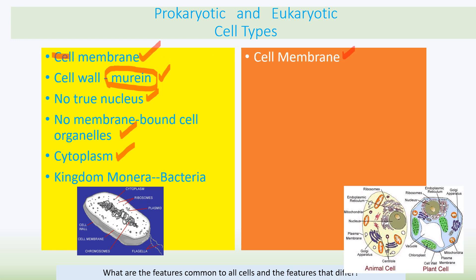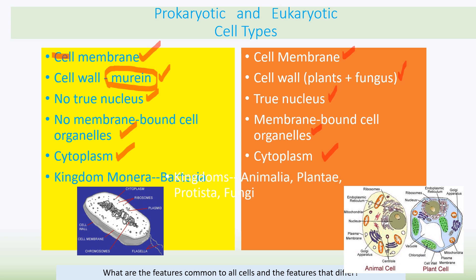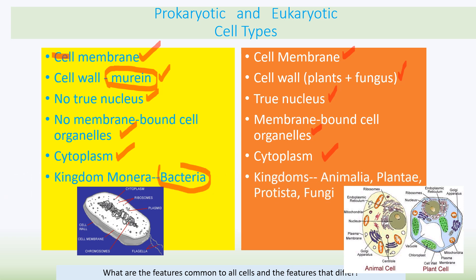Eukaryotic cells have a cell membrane. Not all have a cell wall — animal cells don't — and where present it is made of cellulose. They have a true nucleus bound in a nuclear envelope, membrane-bound organelles such as mitochondria and chloroplasts, cytoplasm, and belong to four of the five kingdoms: animals, plants, protists, and fungi.